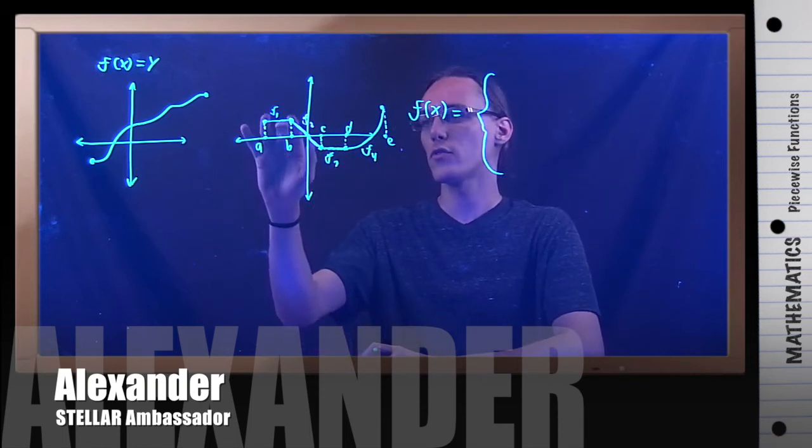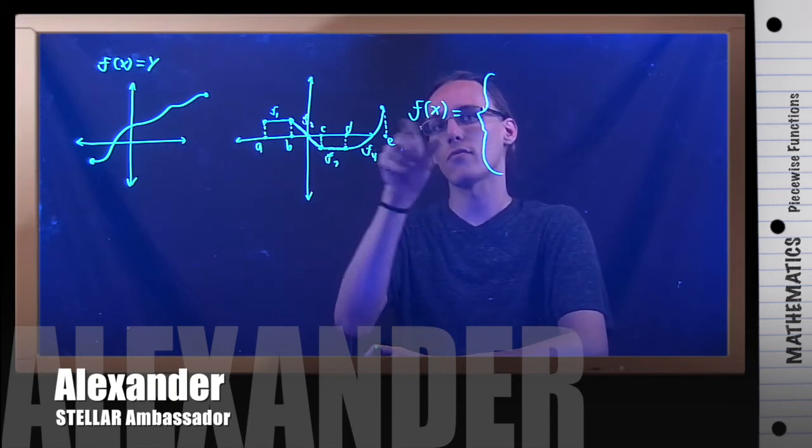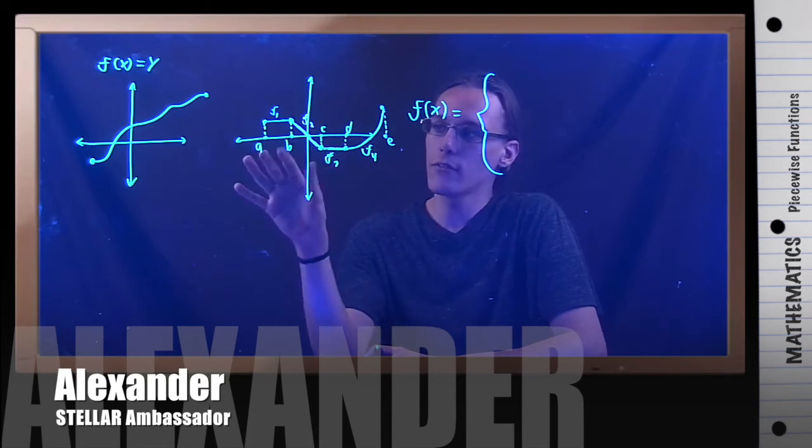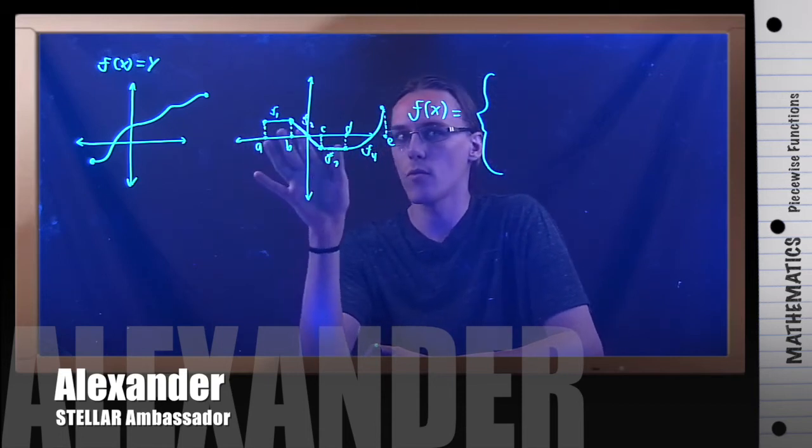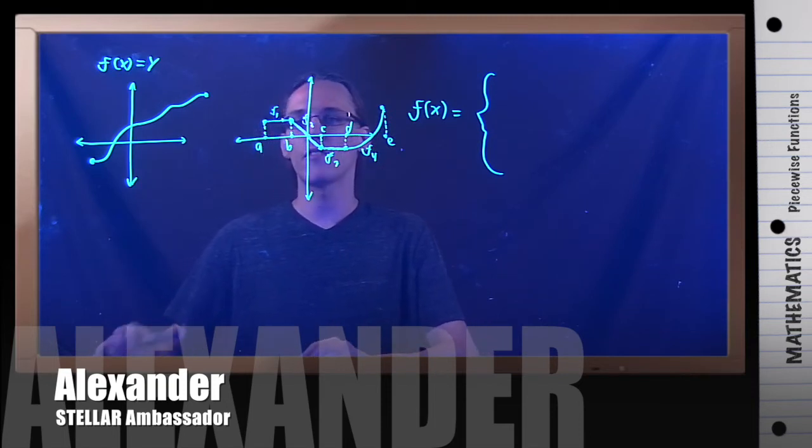So the order that I list these things, usually it wouldn't matter that much. But by convention, we just go left to right. So I'm going to list my first constraints left to right, then everything in the middle, and then end with my furthest thing over. So if I look at the left, this is some constant function.